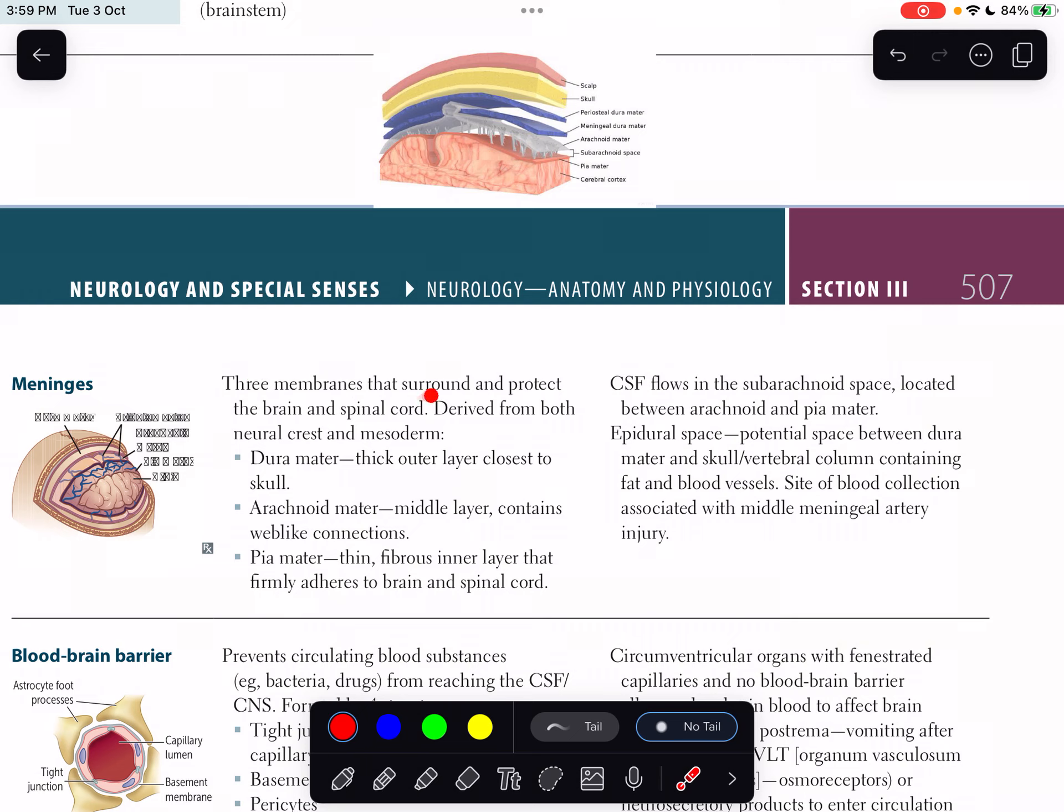Basically, meninges are three membranes that surround and protect the brain and spinal cord. The meninges are derived from both neural crest and mesoderm. Very important - always remember that whenever someone asks where meninges are derived from, you should know: neural crest and mesoderm.